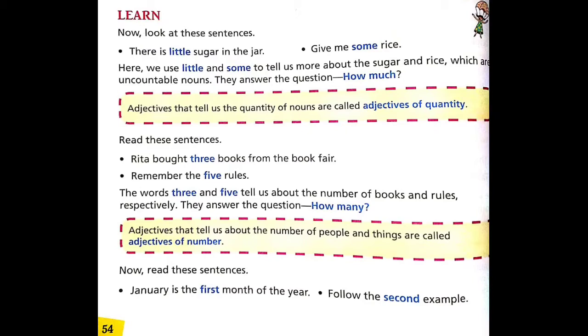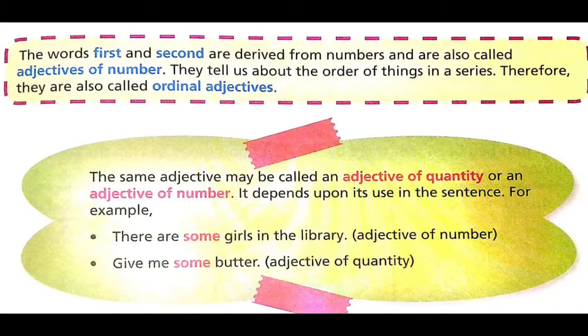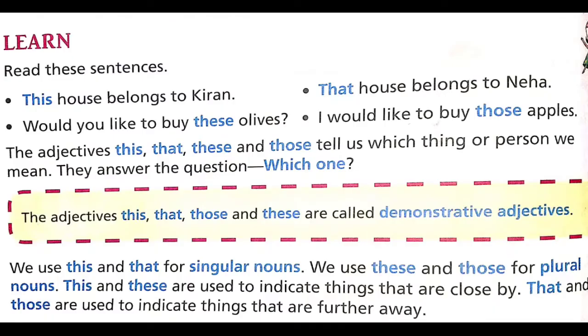Read these sentences: January is the first month of the year. Follow the second example. The words first and second are derived from numbers and are also called adjectives of number. They tell us about the order of things in a series, therefore they are also called ordinal adjectives.